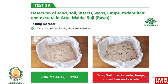Test 19: Detection of sand, soil, insects, webs, lumps, rodent hairs, and excreta in atta, maida, and rava. These can be identified by visual examination.